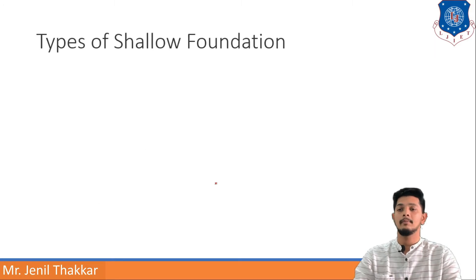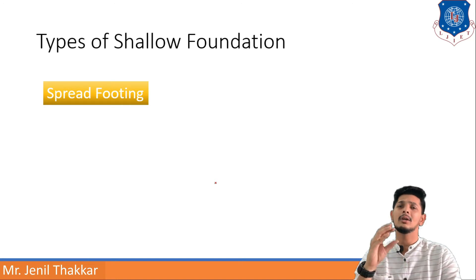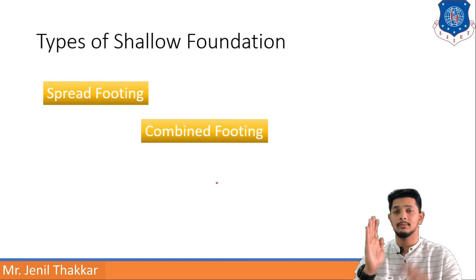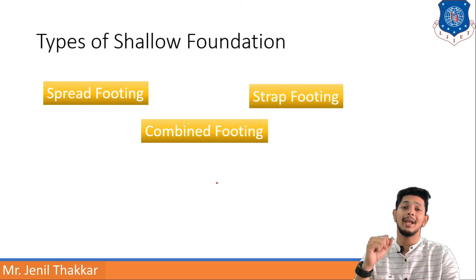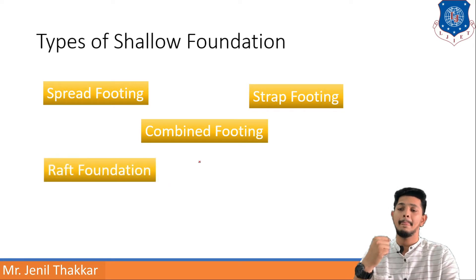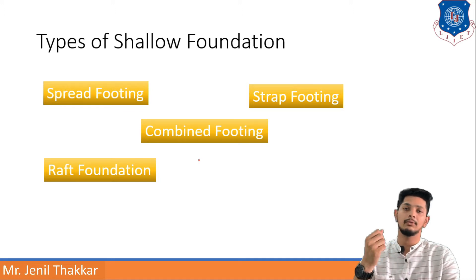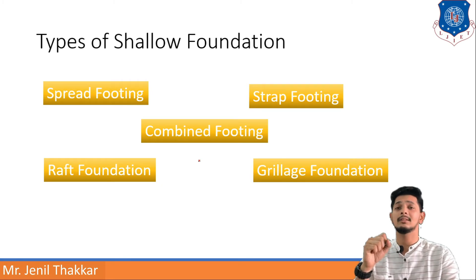Let us now move to the types of shallow foundation. First is spread footing, which spreads over some area. Next is combined footing — when columns are nearby, their footings are combined underneath. Strap footing involves a strap beam constructed between two columns. Raft foundation is used for heavier loads. Finally, grillage foundation is used in steel or composite construction.